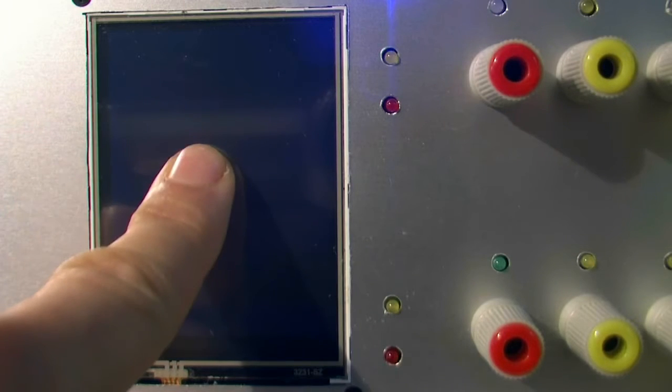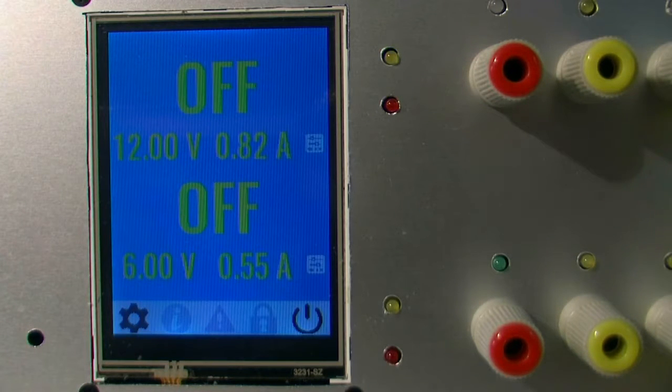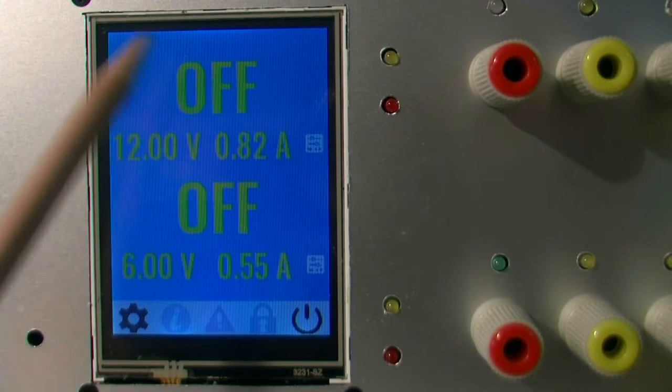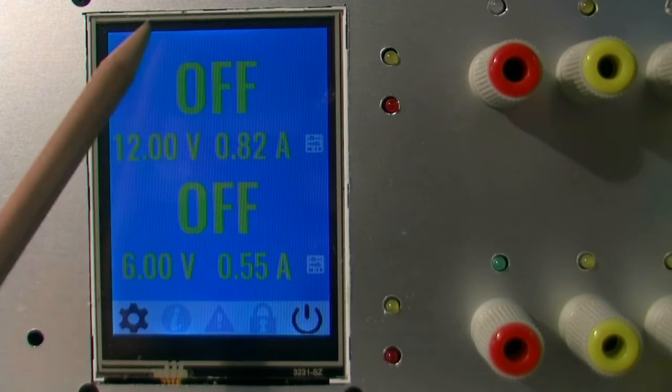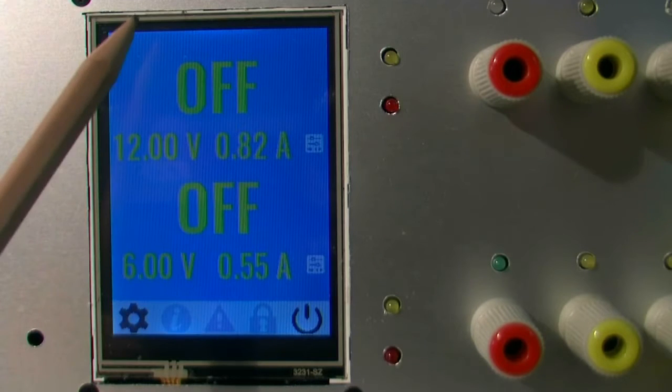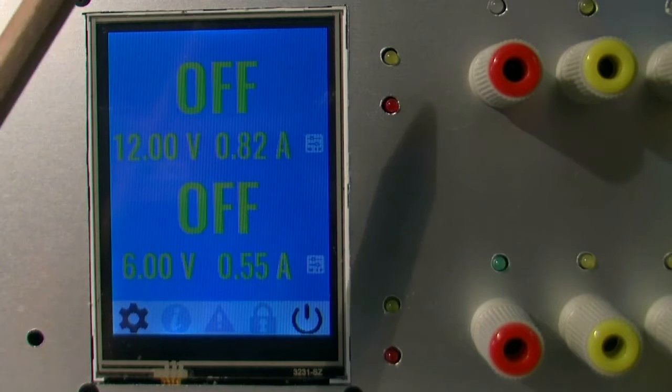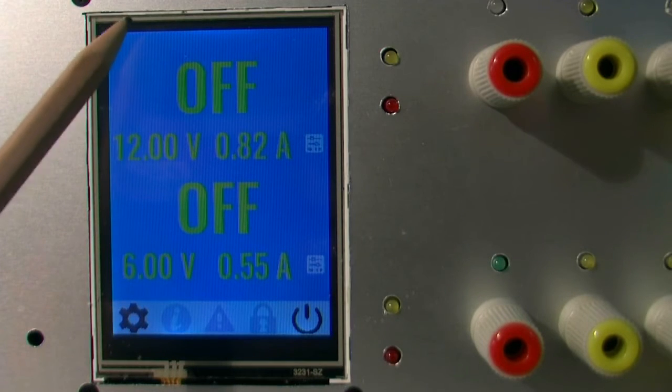So let's start with just switching it on and see how it looks like. This is a main screen, it consists of four sections.